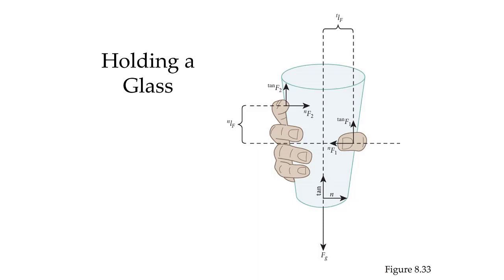Finally, let's look at holding a glass. We've looked at transporting a glass back and forth in terms of linear kinematics, and we've talked about creating forces to prevent the cup from slipping when discussing friction. Here, let's talk about the torques that have to be accounted for by the central nervous system in order to hold a glass steady.